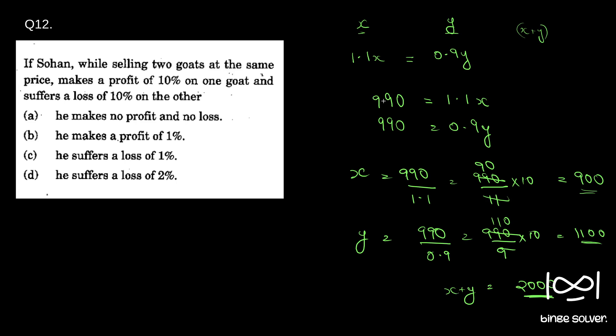We assumed 990 is the price at which he sold both goats, so total selling price is 990 plus 990, which is 1980. This is the total selling price, which is 990 plus 990.